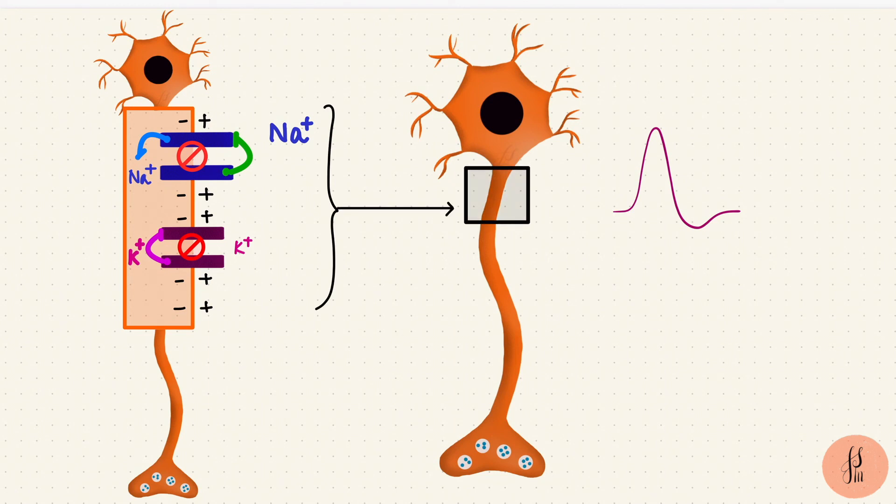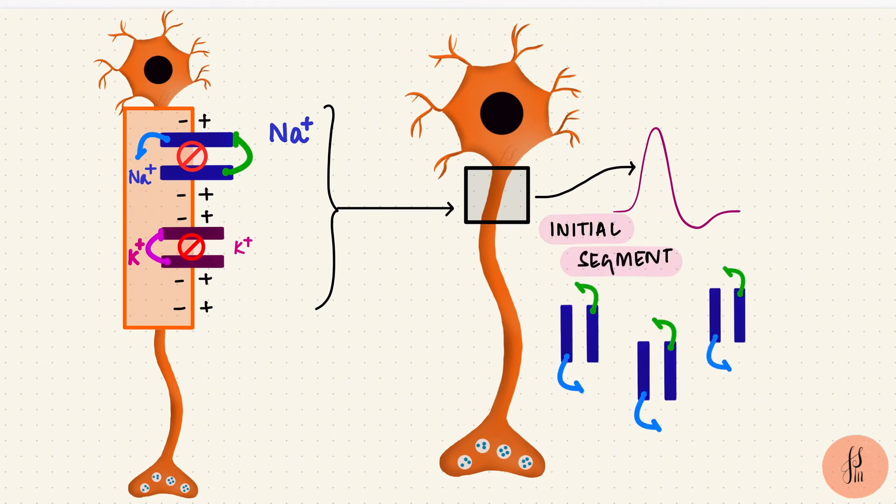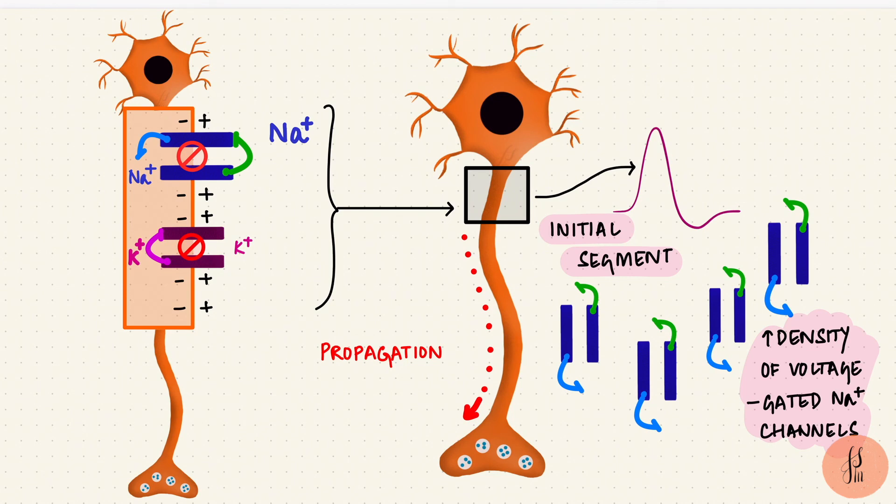This action potential usually starts at the initial segment, because that's where there is the highest density of voltage-gated sodium channels. And once the action potential is generated, it has to get propagated. And that's what we're going to see in part 3.